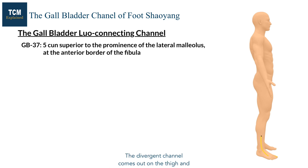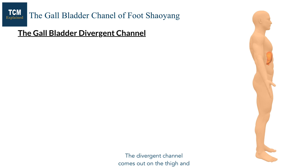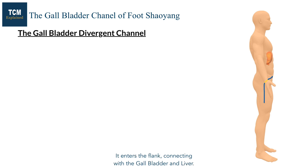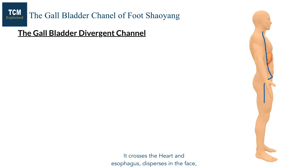The divergent channel comes out on the thigh and goes up the pubic hairline, meeting with the liver divergent channel. It enters the flank, connecting with the gallbladder and liver. It crosses the heart and esophagus, disperses in the face and connects with the eye, rejoining the primary channel.